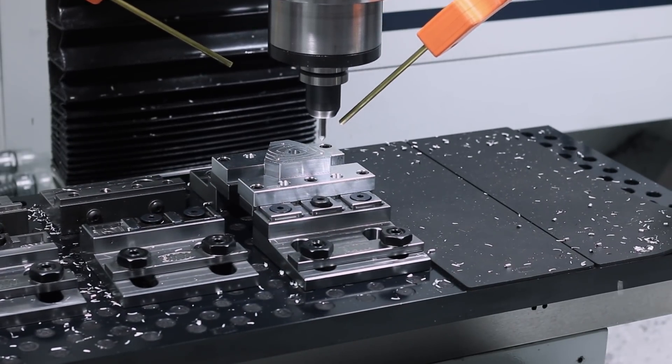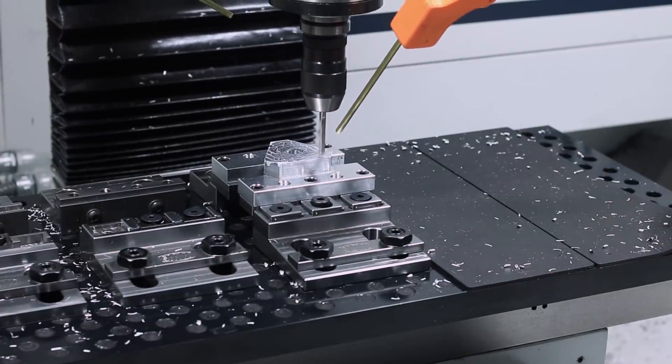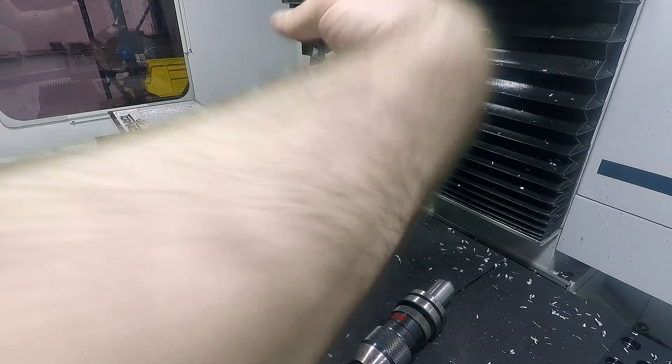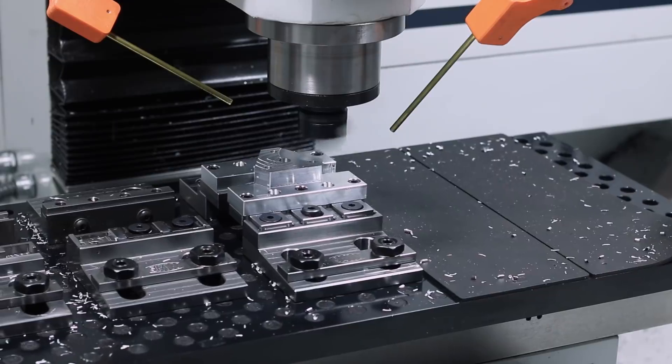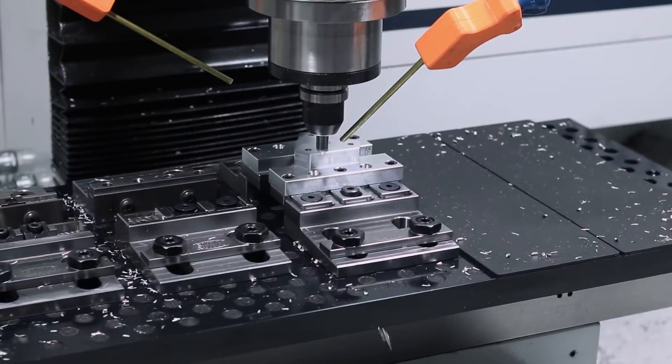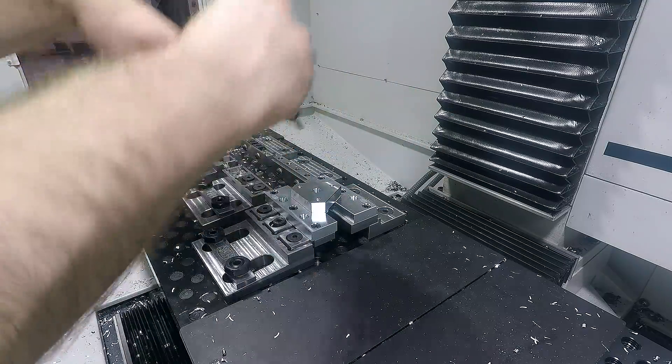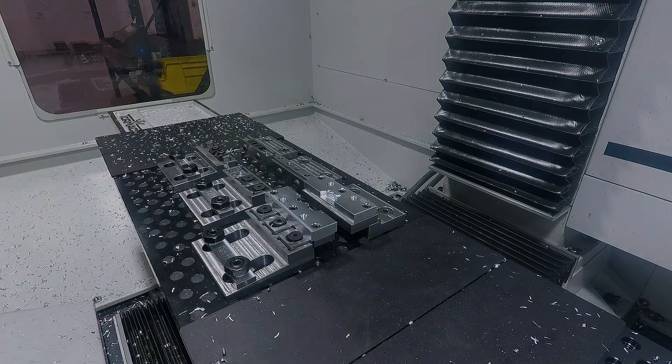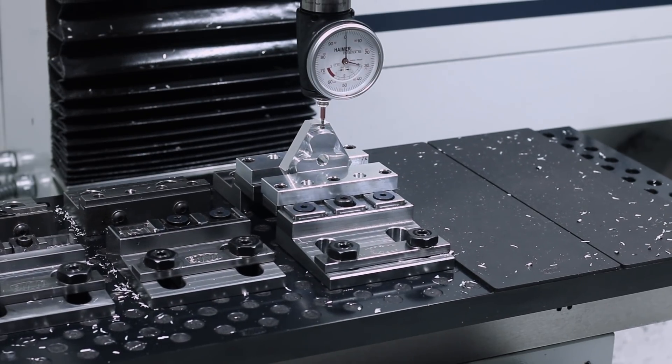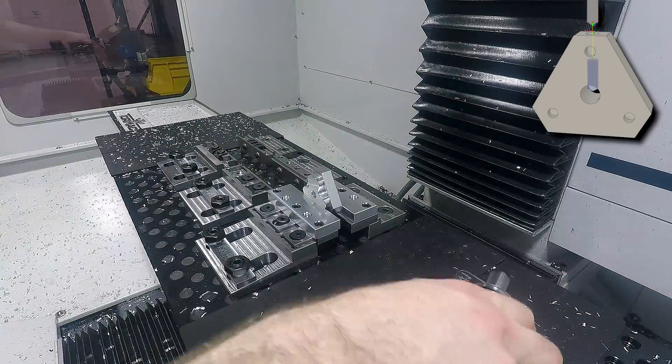These three holes will be tapped to 1/4-20 for grub screws to hold the tools securely in the turret. Holding the part vertically in the same vise to drill the 1/4-inch mounting holes for these tools, I decided rather than drill separate holes on the long faces of the turret, we could just drill on through with a number 7 and tap those 1/4-20 for the grub screws that hold the turret to its shaft.